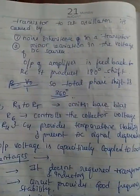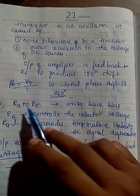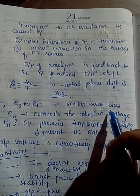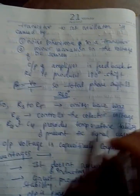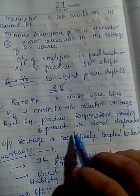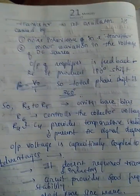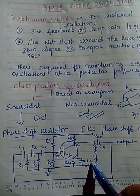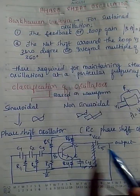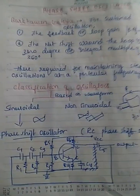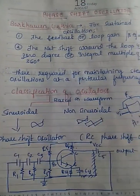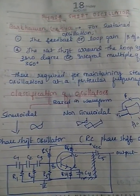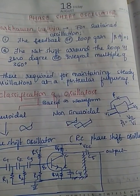R3 and R5 control the emitter-base bias. R6 controls the collector voltage. R4 and C4 provide temperature stability and prevent AC signal degeneration. The output signal is coupled through capacitor C5, and we get a sustained oscillation from this.